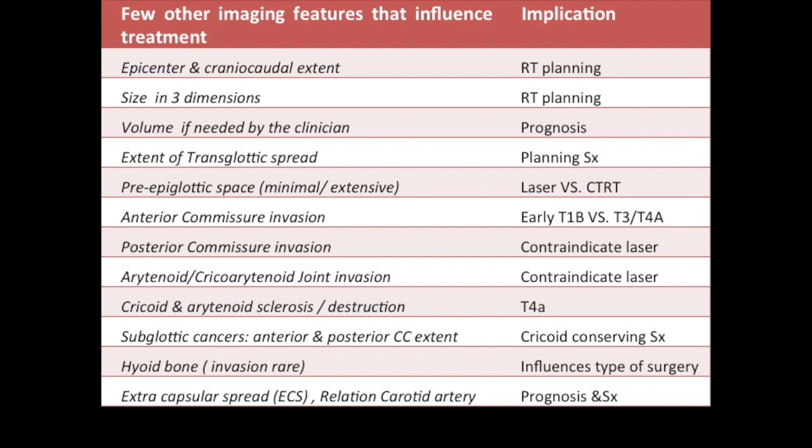Involvement of the posterior commissure is a contraindication for laser surgery. Arytenoid and cricoid joint invasion also contraindicates the use of laser in such patients. Cricoid and arytenoid sclerosis or destruction constitutes T4A disease and these are patients for surgical management. Subglottic extension — anteriorly more than 10 mm and posteriorly more than 5 mm — is a contraindication for cricoid preservation, and these patients are candidates for cricoid resection.